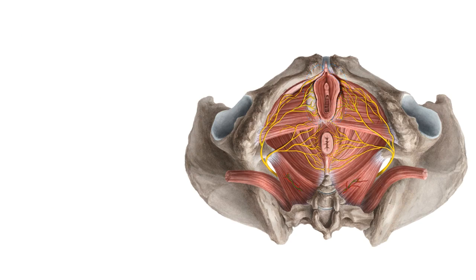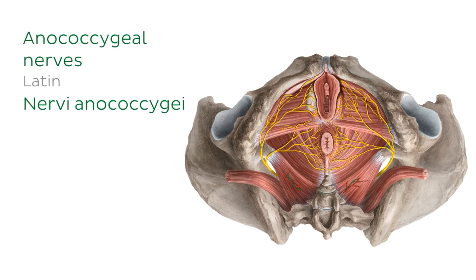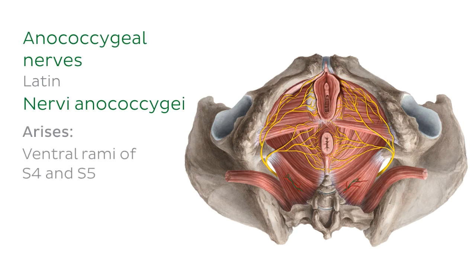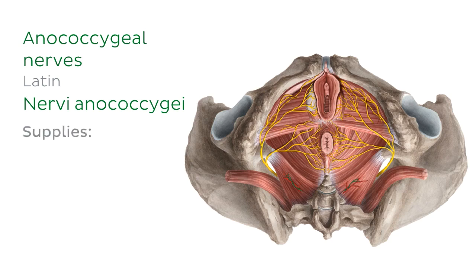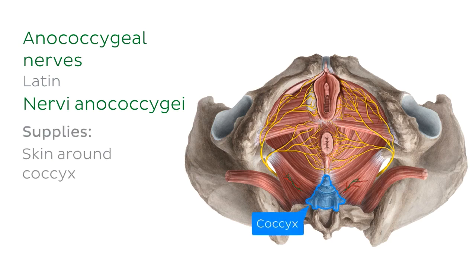The final nerves are the anococcygeal nerves, which originate from the coccygeal plexus formed by the ventral rami of S4 and S5. These nerves pierce the sacrotuberous ligament and provide sensory innervation to the skin above the coccyx.